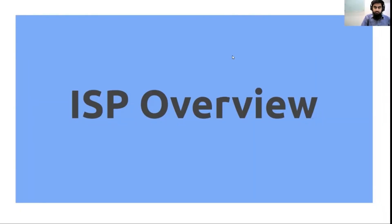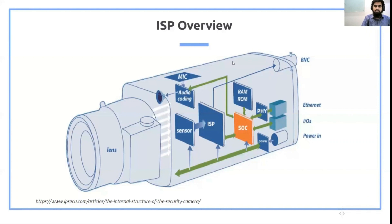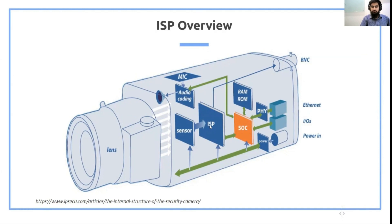Before going into the details of Infinite ISP, let's see what an ISP — the Image Signal Processor — is. Here you can see the internals of the camera. We have a lens that focuses the scene being captured and focuses its light rays to a sensor. The sensor is essentially a 2D array of pixels and it converts the light rays coming from the lens into raw pixel values, which are then fed to the ISP. The ISP is the main image processing block unit — it converts that raw image into a viewable, pleasing image that we see as an output of the camera.